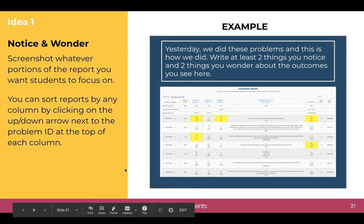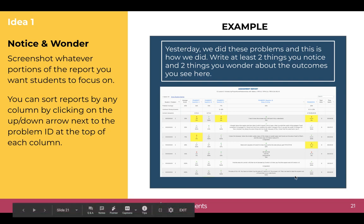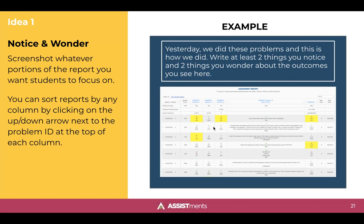For the notice and wonder, you can take a screenshot of any item report you have. Keep in mind that you can edit the item report or curate the data by clicking the arrows at the top of each column to reorder the data. Once you've taken a screenshot, you give students a quick prompt where they look at the data — here we've asked them to explain two things they notice and two things they wonder about the outcomes they see in this data.